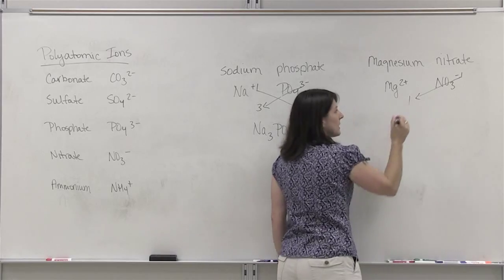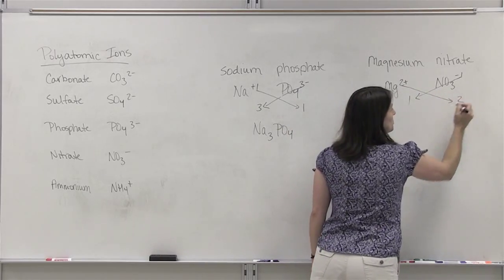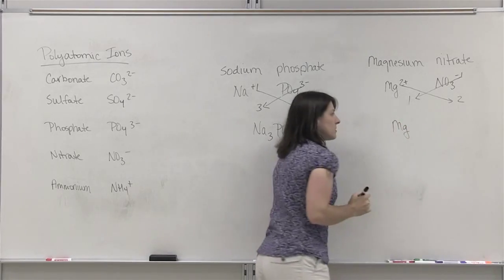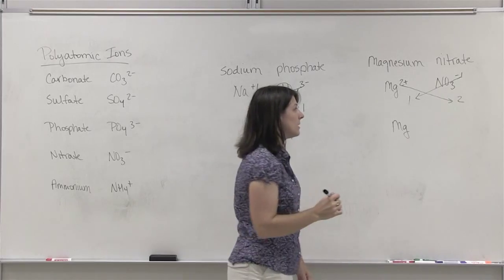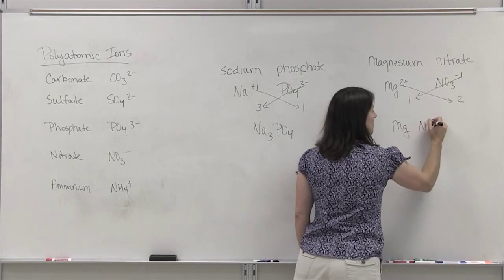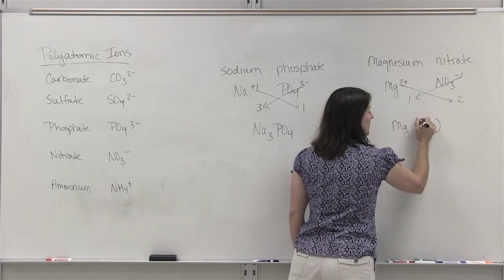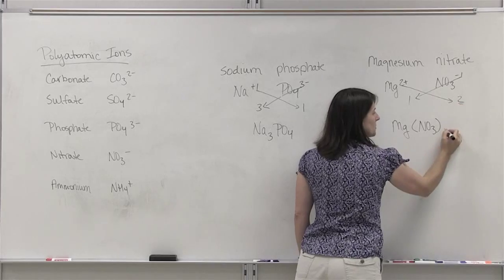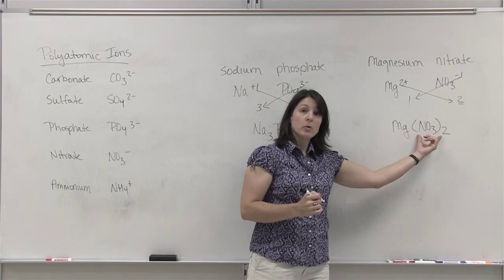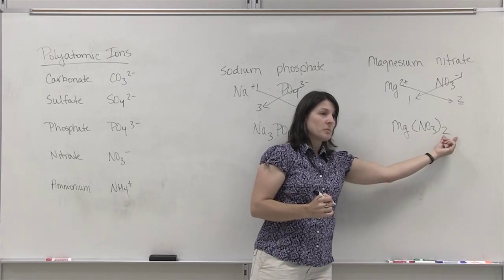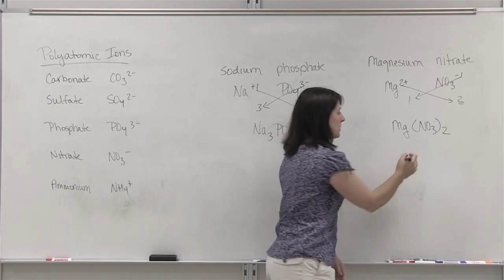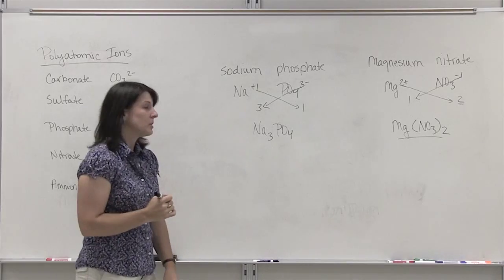We need one magnesium. We need two nitrate groups. Mg, we only need one magnesium ion. Since we need more than one group of the nitrate, we're going to put the formula for nitrate in parentheses and put the new subscript outside the parentheses. The parentheses hold that group together. The subscript outside the parentheses tells you how many of that group you need. So this would be the correct formula for magnesium nitrate.